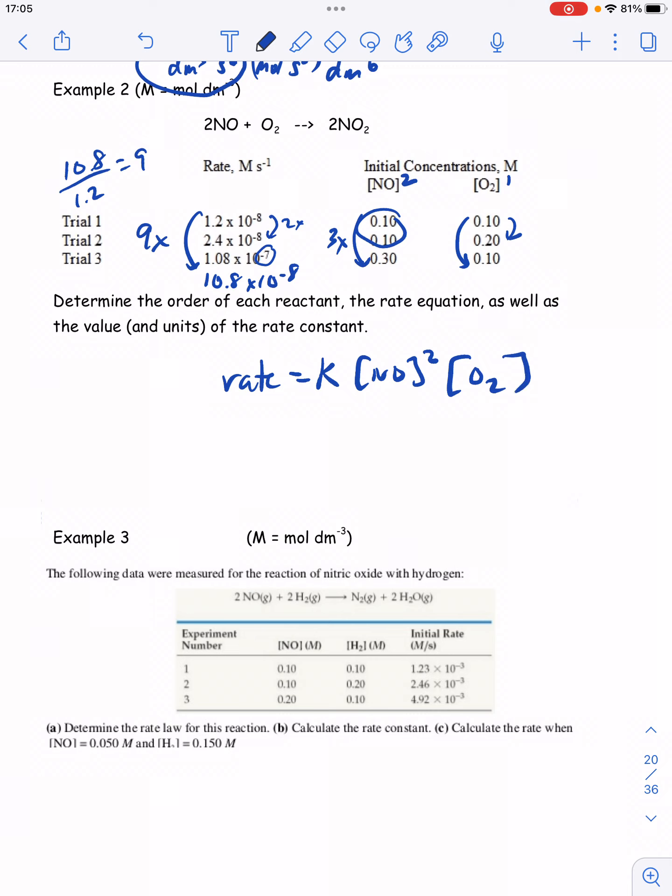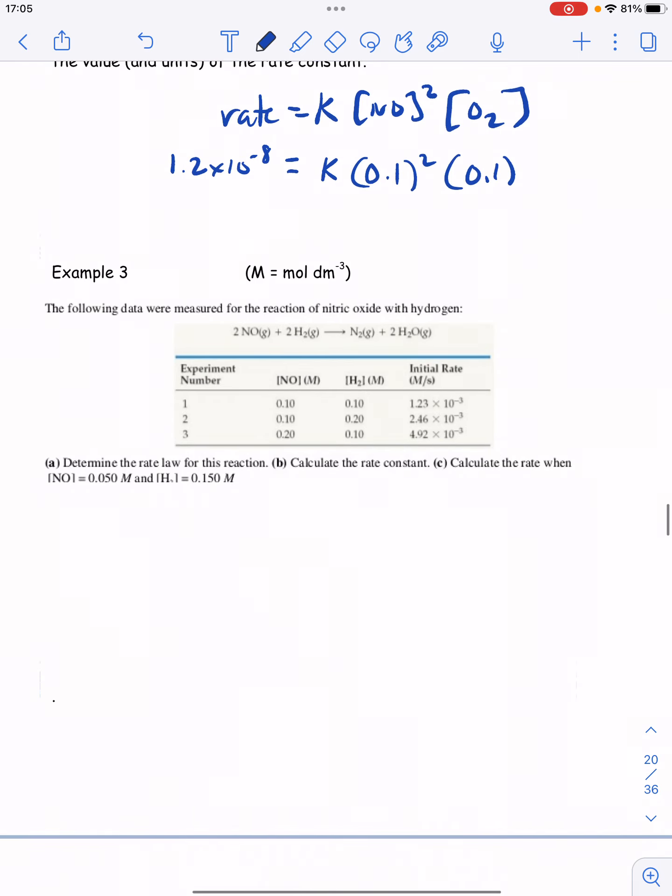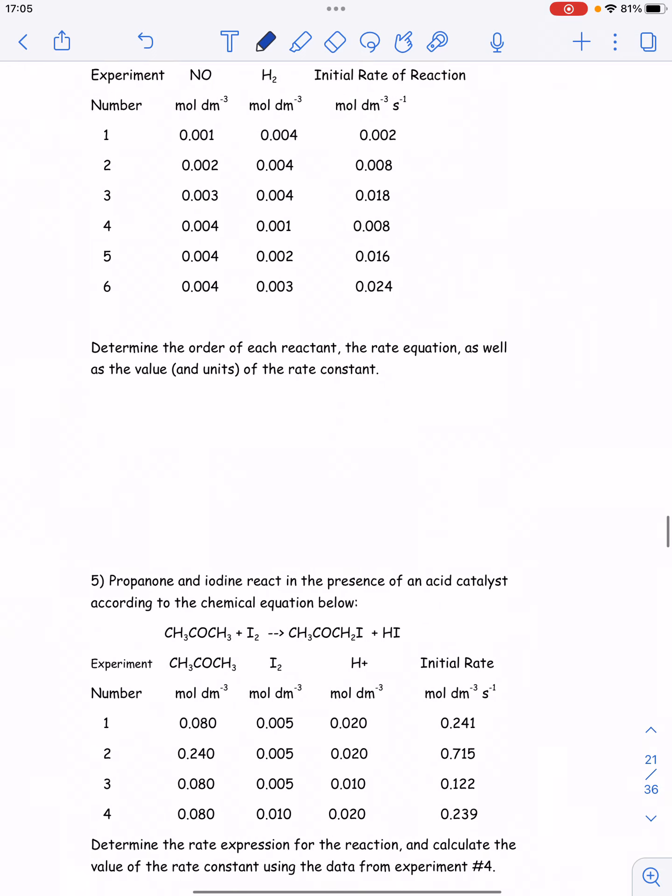Now, I see in this question, it asks you to solve for the value of the rate constant. All you have to do is pick values from one of the trials. So you could pick all these values here. You plug in 0.1 for NO. You plug in 0.1 for O2. You're solving for K. And you plug in 1.2 times 10 to the minus 8 for rates. And then you just do a little algebra and solve for K. Okay, I'm going to skip ahead because this is kind of more of the same.